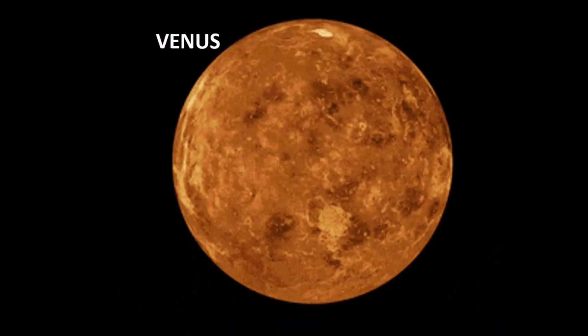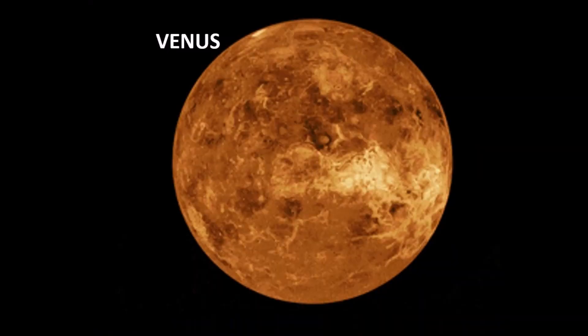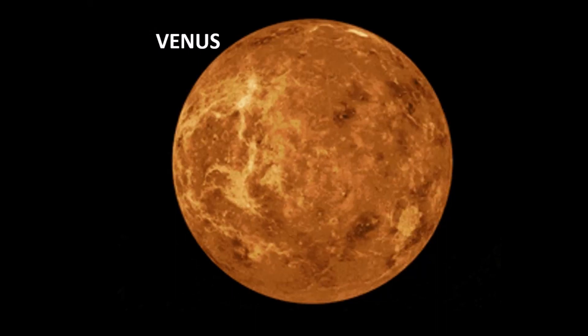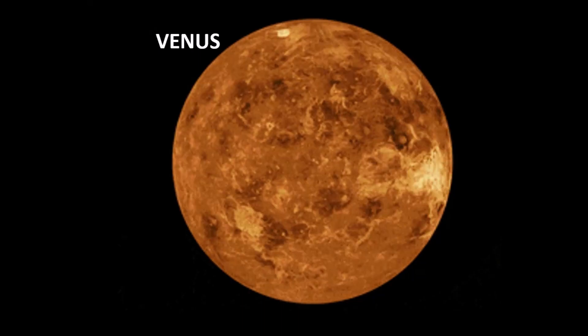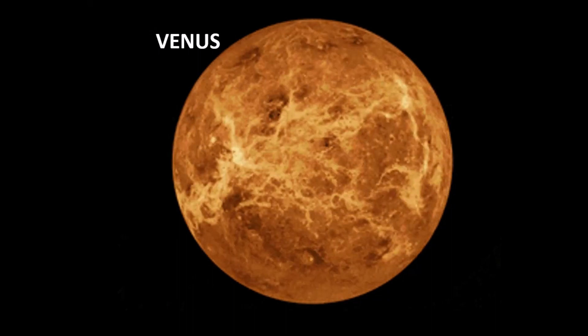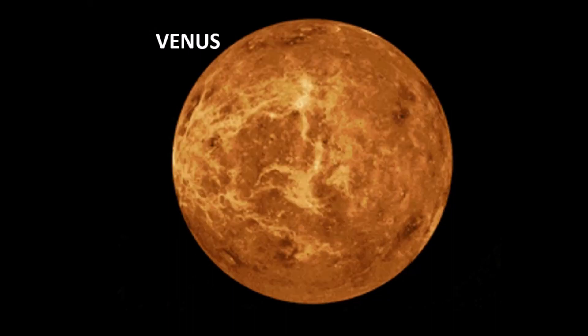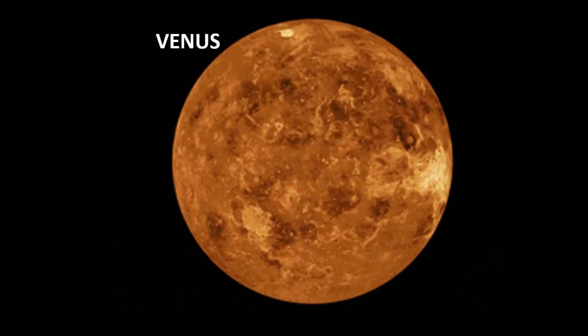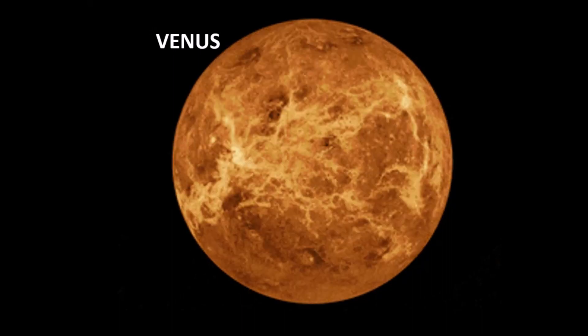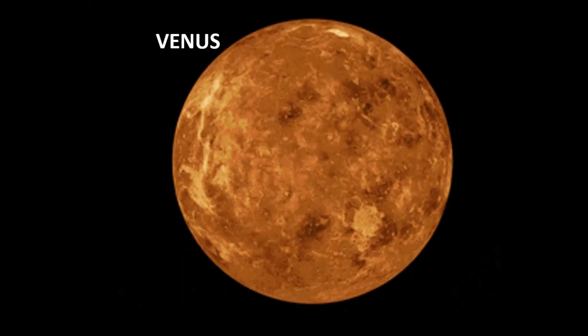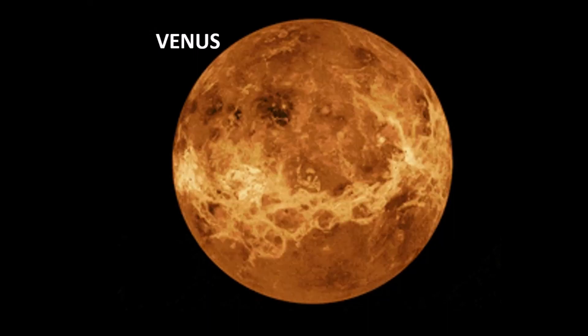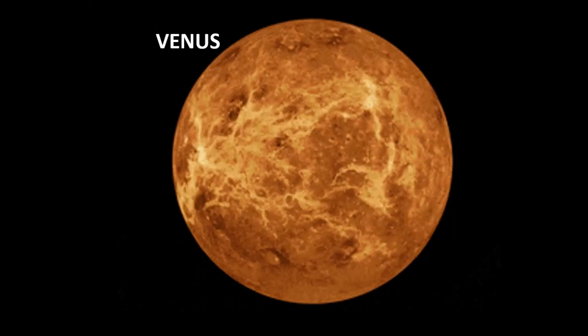Now the second planet is Venus. And you know it is spinned in the opposite direction of other planets. All planets spin from west to east, but this spins from east to west. And it is also known as the evening or morning star. Because though it is not a star, it only visible in the sky in the evening or in the morning. That's why it is known as the evening or the morning star. And it is the brightest planet in the solar system.